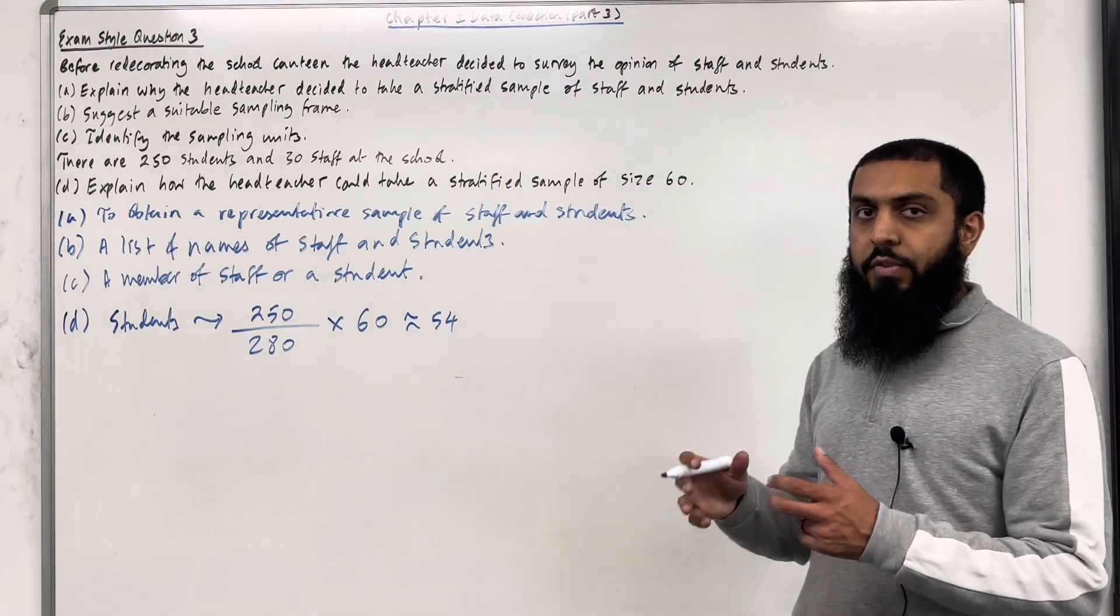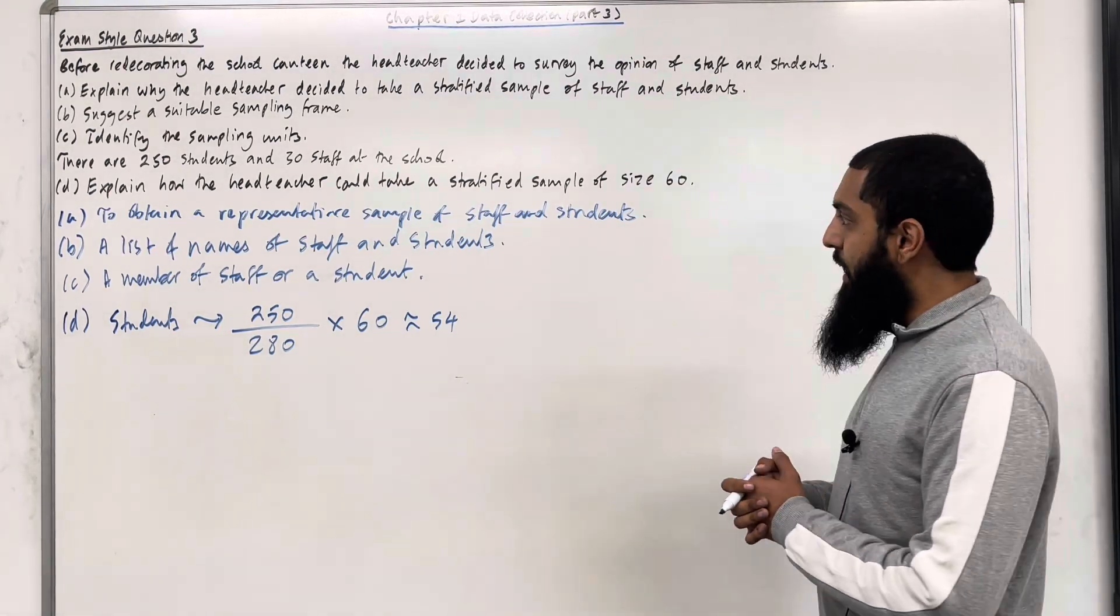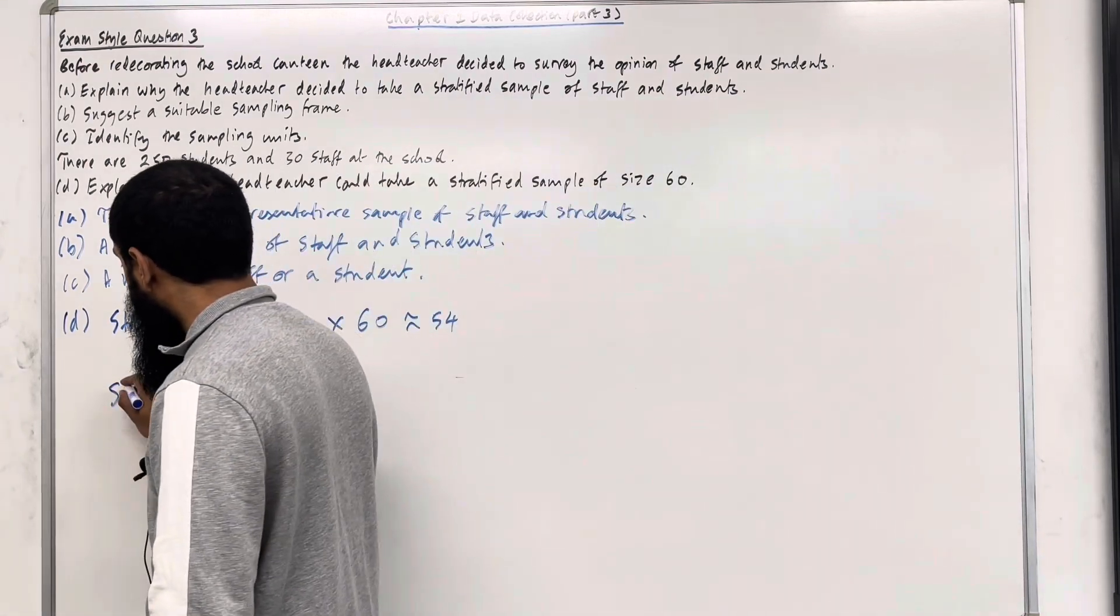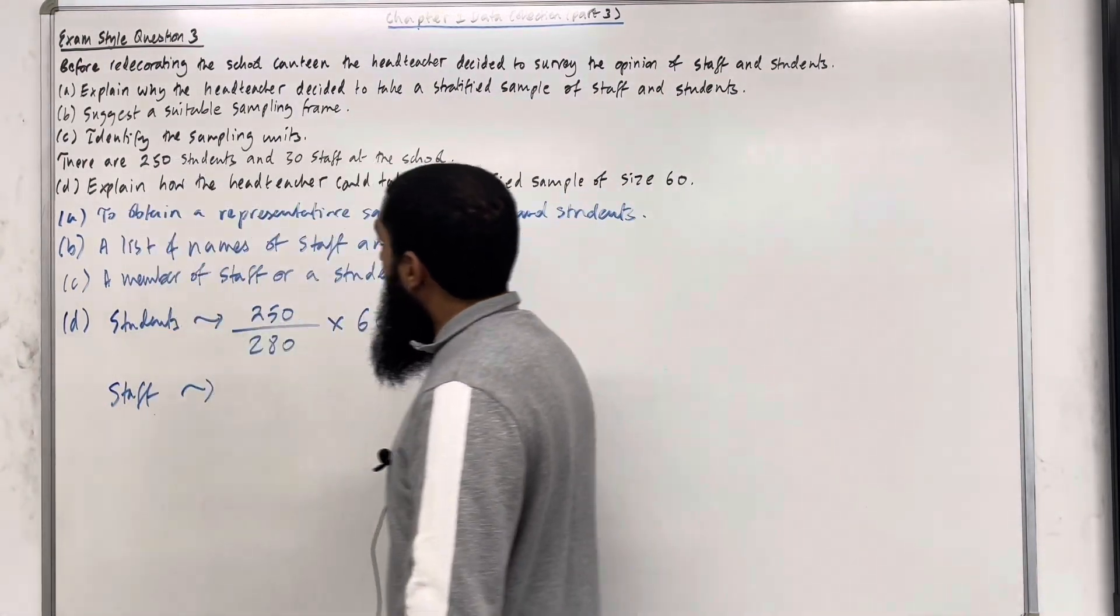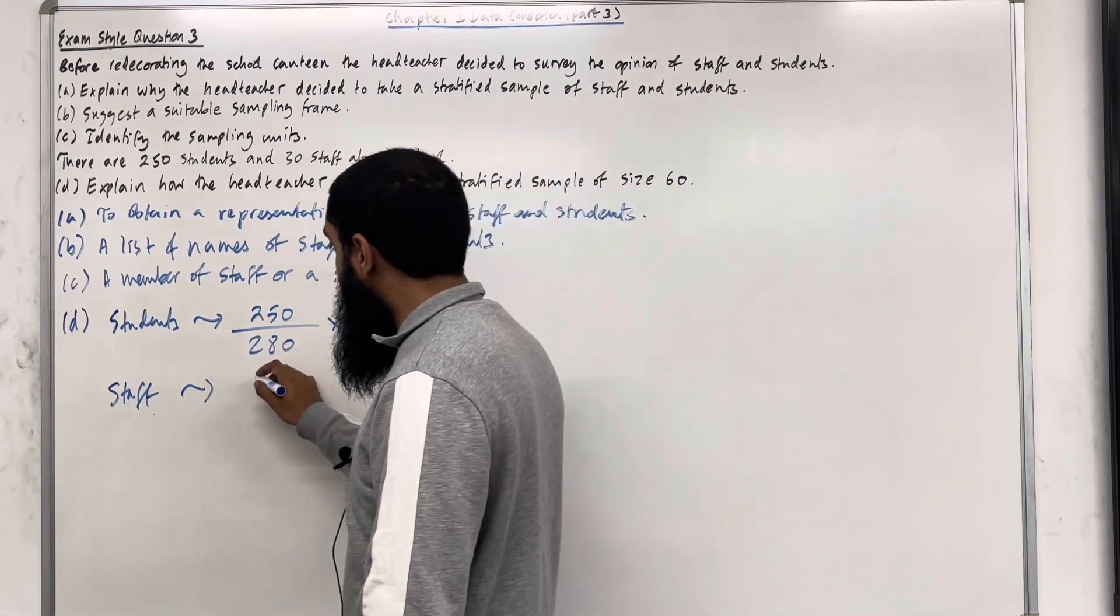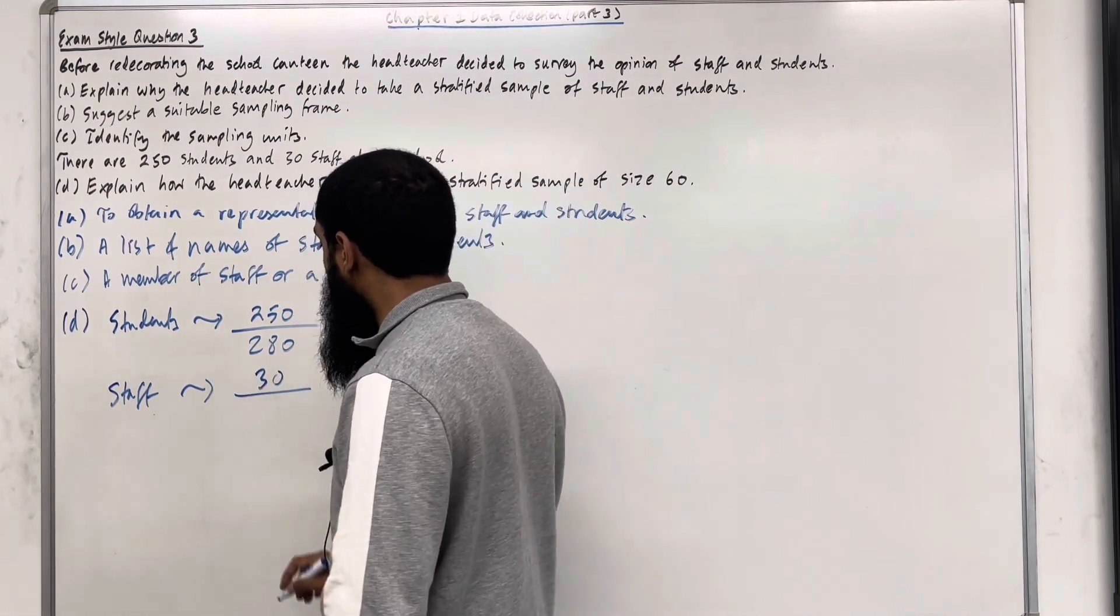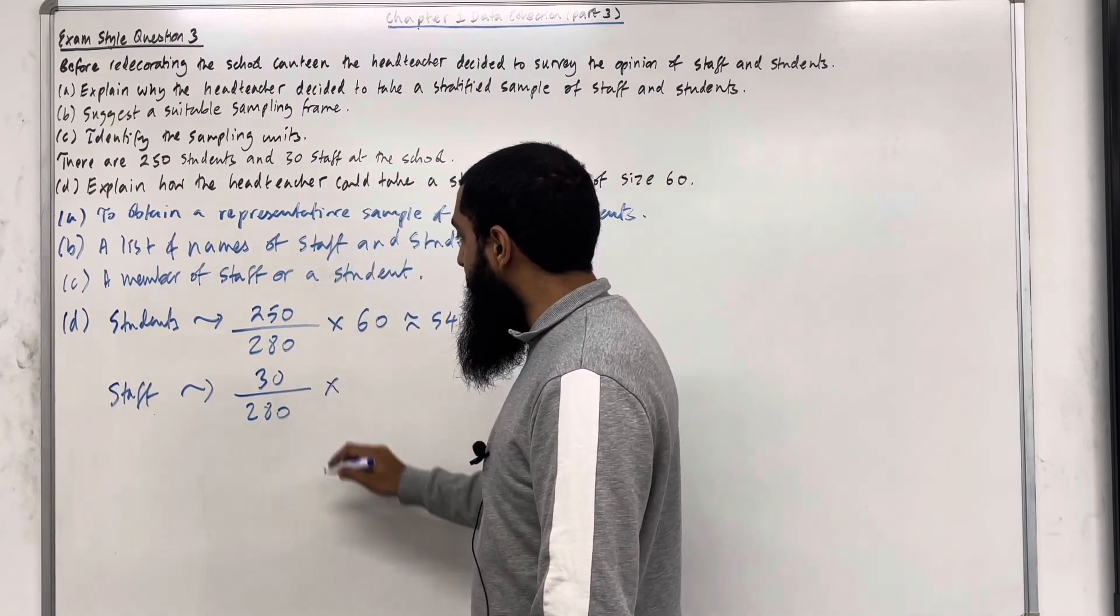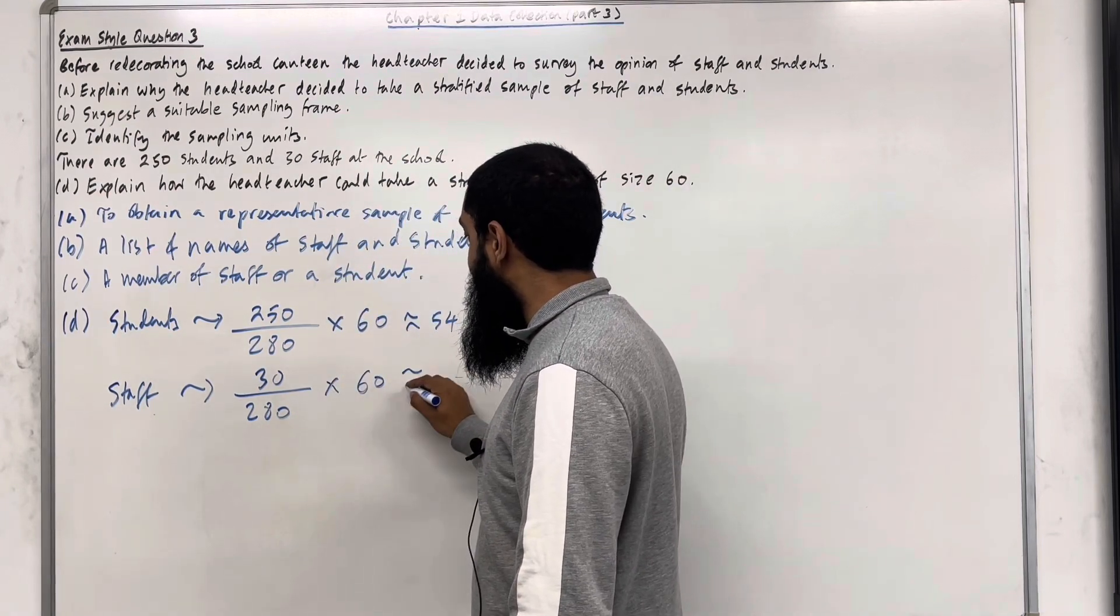Now we're going to look at the number of staff members that we need in a sample size of 60. So moving on to staff. This time we do 30. So we have 30 staff members out of a possible 280 staff and students multiplied by the sample size of 60. This gives me roughly 6.